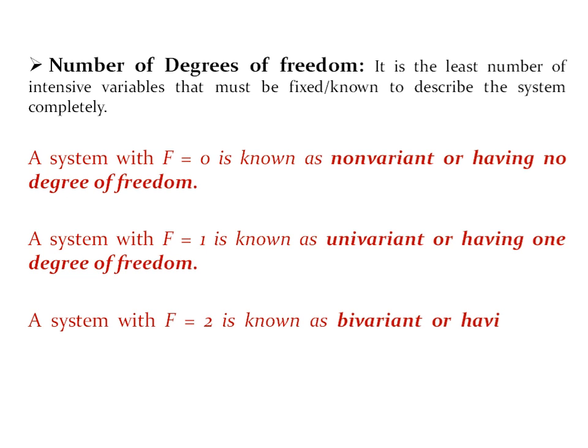When F equals two, the system is known as bi-variant, having two degrees of freedom. In that condition, you require at least two parameters to define your system completely.